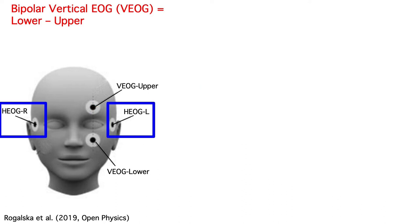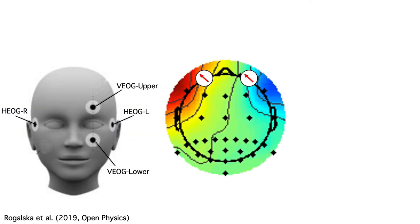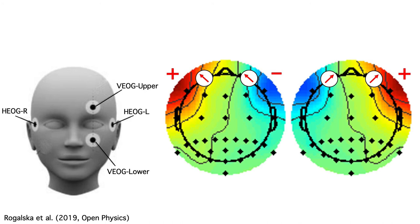To look at horizontal eye movements, we place horizontal EOG electrodes just lateral to each eye. When the eyes move leftward, we get a positive voltage over the left side of the head and a negative voltage over the right side of the head. And when the eyes move rightward, we get a positive voltage over the right side and a negative voltage over the left side.